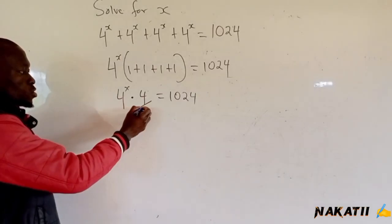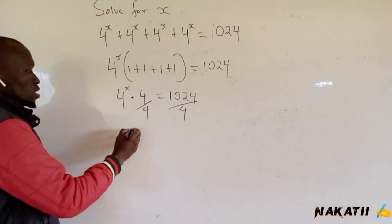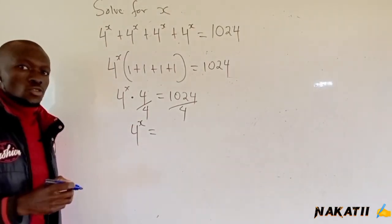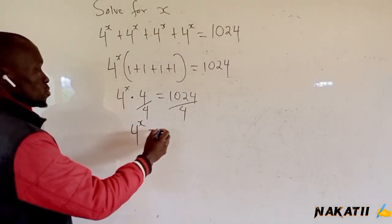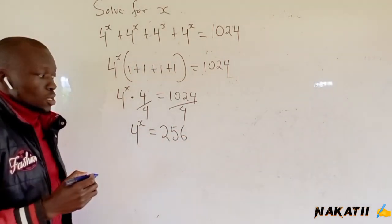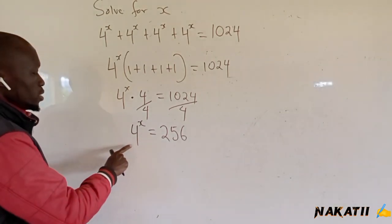We can divide both sides by 4. We remain with 4 raised to x equals 1024 divided by 4. We get 256. We can now write this in index form.